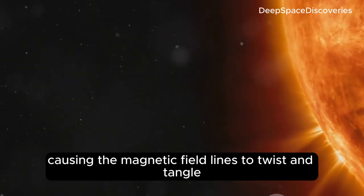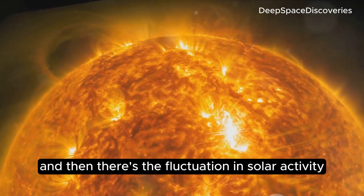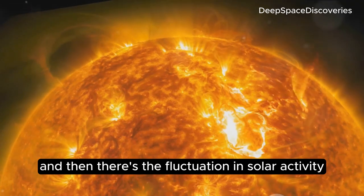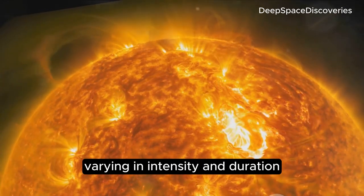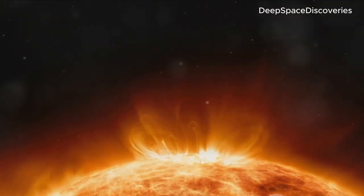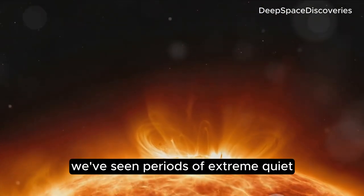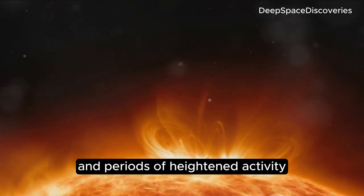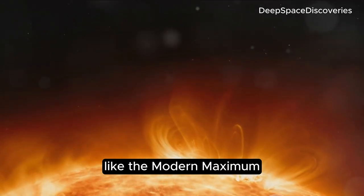And then there's the fluctuation in solar activity. It's not always the same, varying in intensity and duration, with cycles ranging from 9 to 14 years. We've seen periods of extreme quiet, like the Maunder Minimum, and periods of heightened activity, like the Modern Maximum.